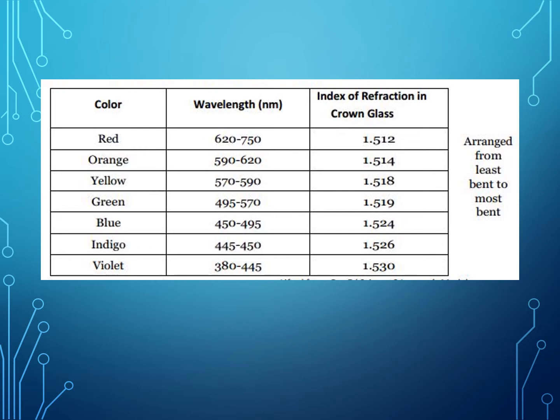This table will be your guide in answering questions about wavelength and the index of refraction in crown glass — the colors of light and variation of refractive index. The colors are arranged from least to most bent. You have the colors of the spectrum: red, orange, yellow, green, blue, indigo, and violet, each with their corresponding wavelength in nanometers and index of refraction in crown glass.